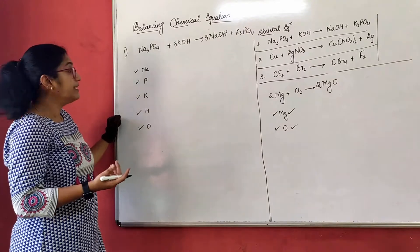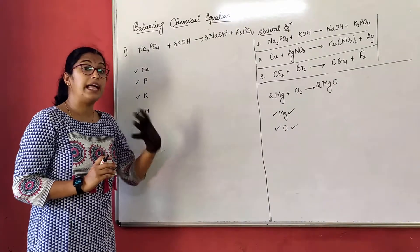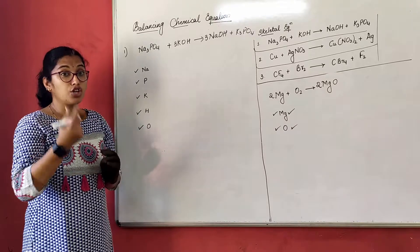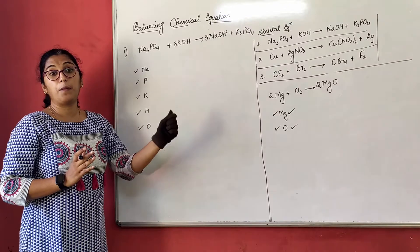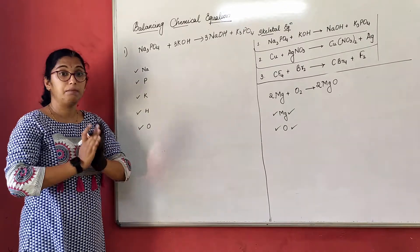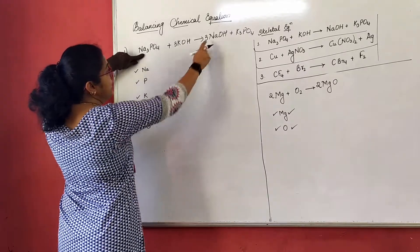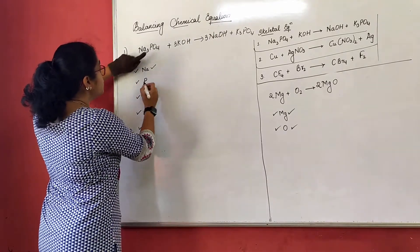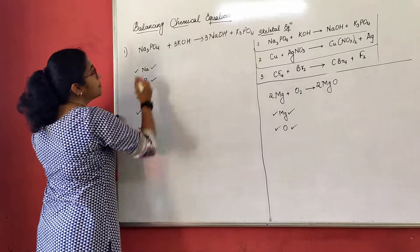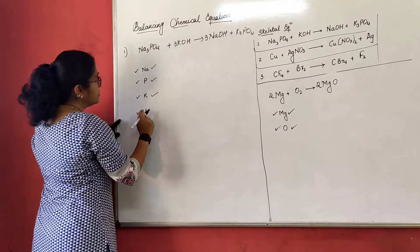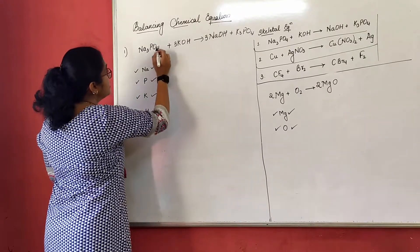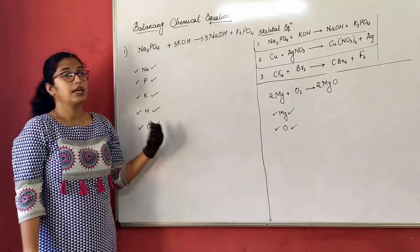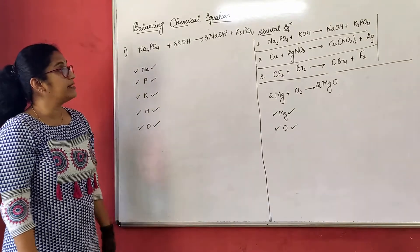Now we cross-check once again. We cross-check to make sure all elements are properly balanced — reactant and product. Sodium is 3 and sodium is 3 — balanced. Phosphorus is 1 and phosphorus is 1 — balanced. Potassium is 3 and potassium is 3 — balanced. Hydrogen is 3 and hydrogen is 3 — balanced. Oxygen: 4 plus 3 equals 7; oxygen: 3 plus 4 equals 7 — balanced. We have balanced this second equation.